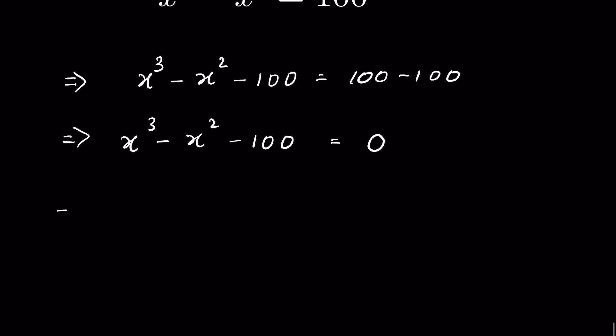How can we factorize this trinomial? We can write 100 in the form of minus 125 plus 25, which will be equal to minus 100.